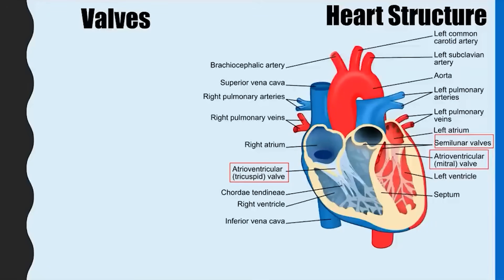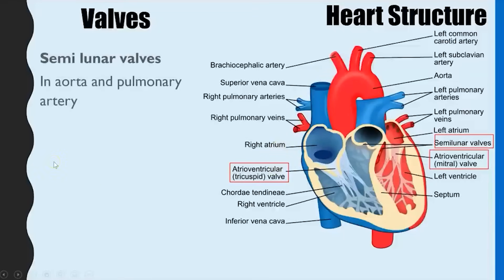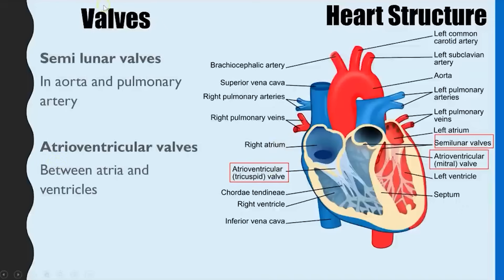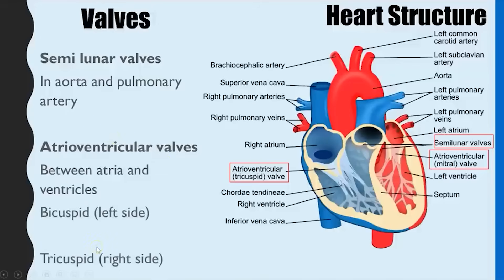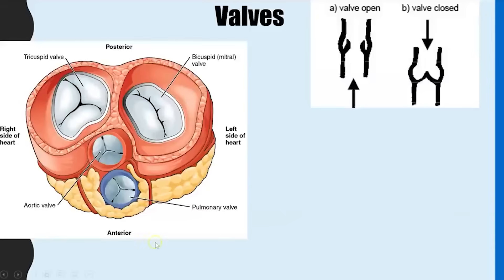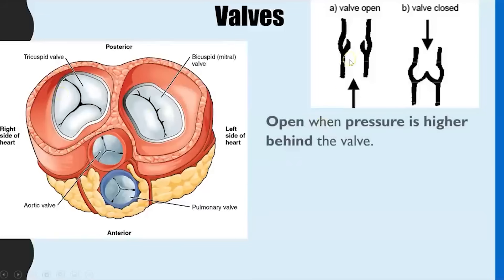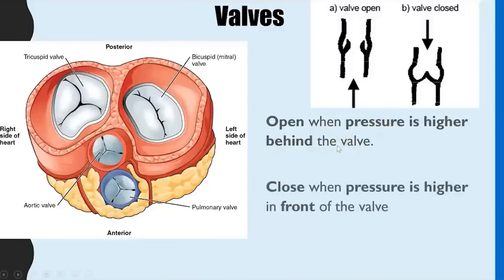The valves play a key role in the cardiac cycle, controlling unidirectional blood flow and preventing backflow into the atria. There are two sets: semilunar valves, found between the ventricles and the arteries (in the aorta and pulmonary artery), and atrioventricular valves, found between the atria and the ventricles. These are sometimes called bicuspid and tricuspid, referring to their number of flaps. Valves open when the pressure is higher behind them and close when the pressure is higher in front.